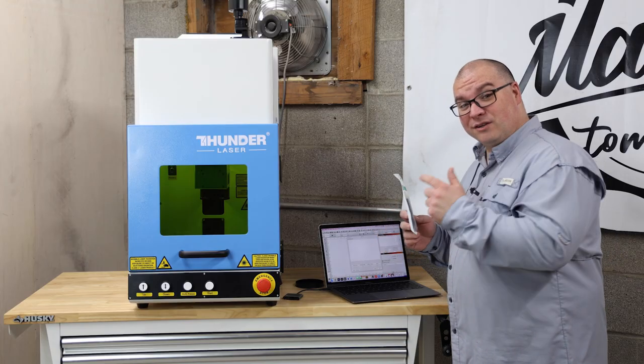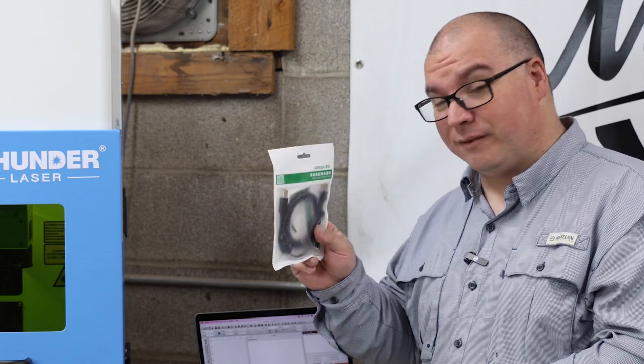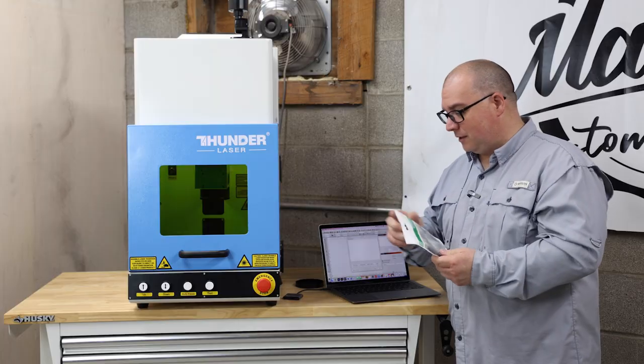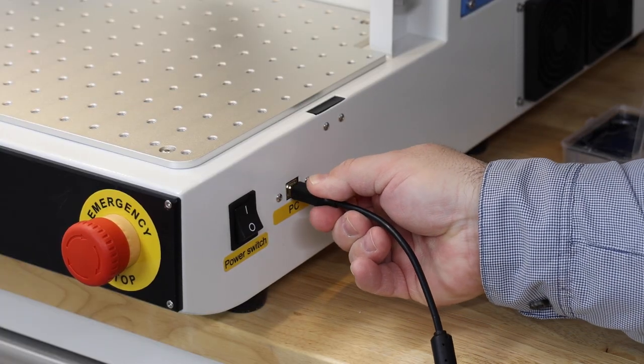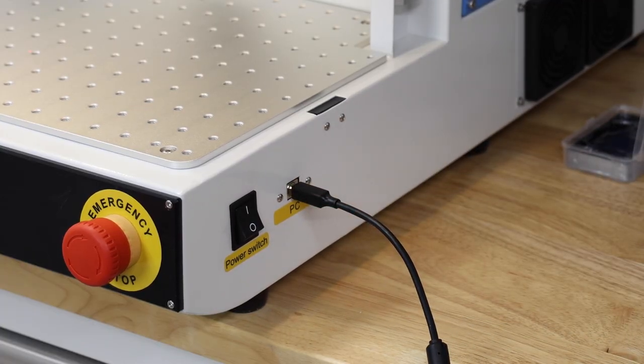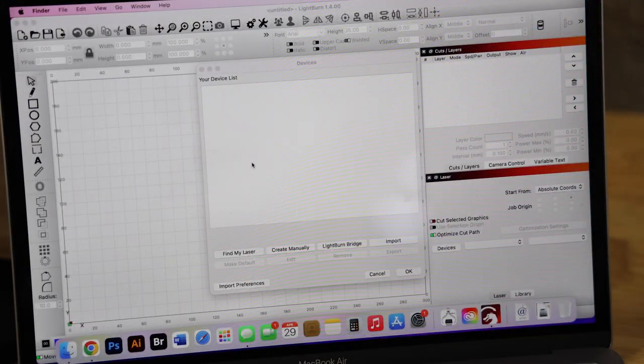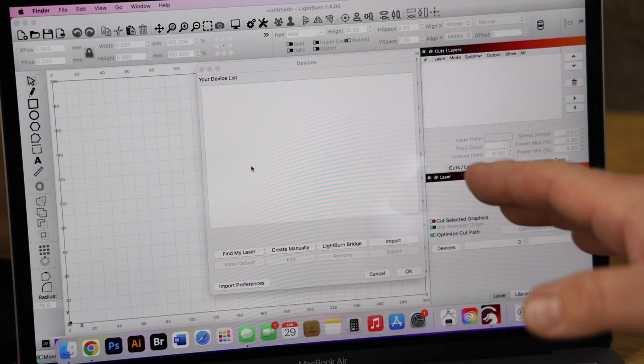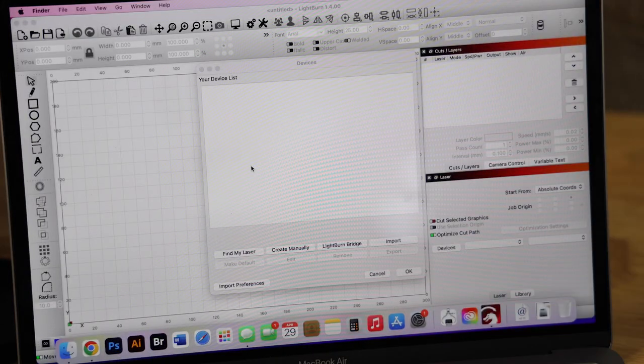The next thing that we're going to do is actually connect this to our computer. It does come with a USB cable here that is included in your little goodie bag that you can plug into the USB port that is here on the side of it. It's labeled PC, and then you connect straight to your computer. So we're actually using Lightburn. We already have Lightburn installed on this computer. I just need to connect the actual laser because this device list is empty right now. No laser there.